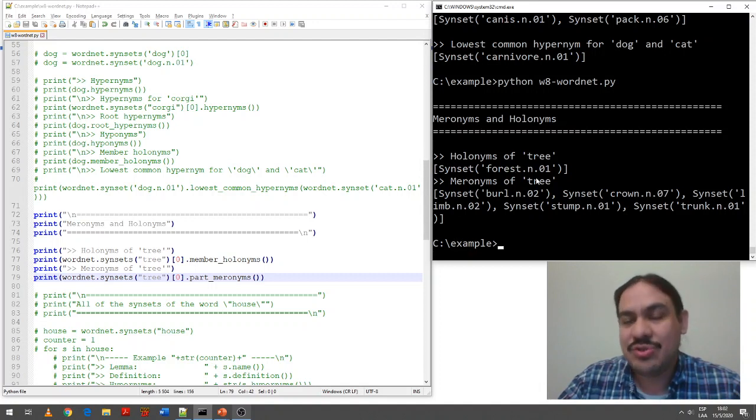And the tree has as its parts a crown, a limb, a stump, a trunk, but not a leaf. As you can see, these are some meronyms or like subparts, subcomponents of tree.